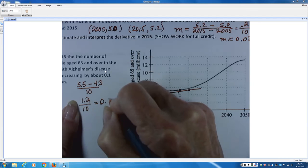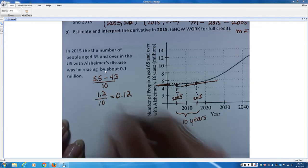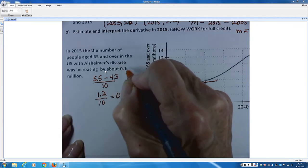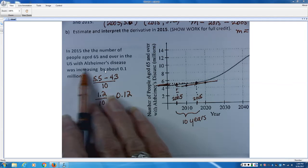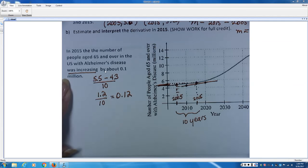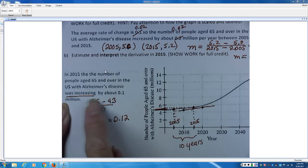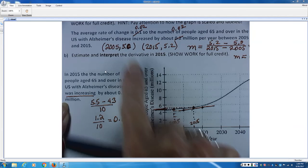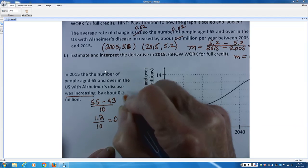So that would be 0.12. So your slope then would be the number of people aged 65 and older in the U.S. with Alzheimer's disease was increasing. Notice the difference in the language. Increase by was increasing. That's a dynamic statement. It is doing it right now. Whereas this was, it increased. That was in the past. This says it is increasing by, in 2015, 0.12.